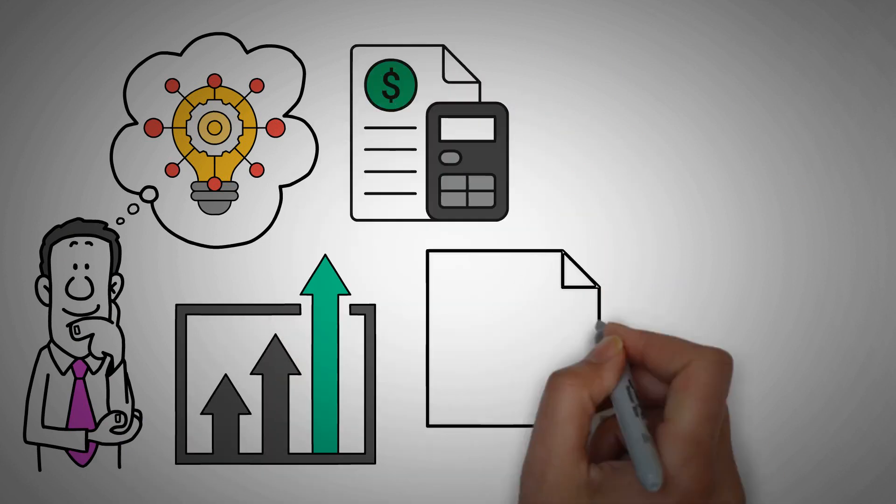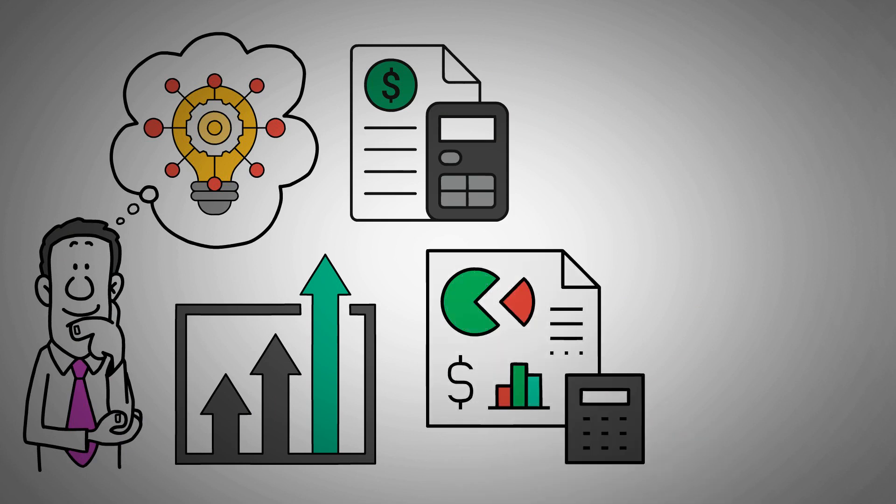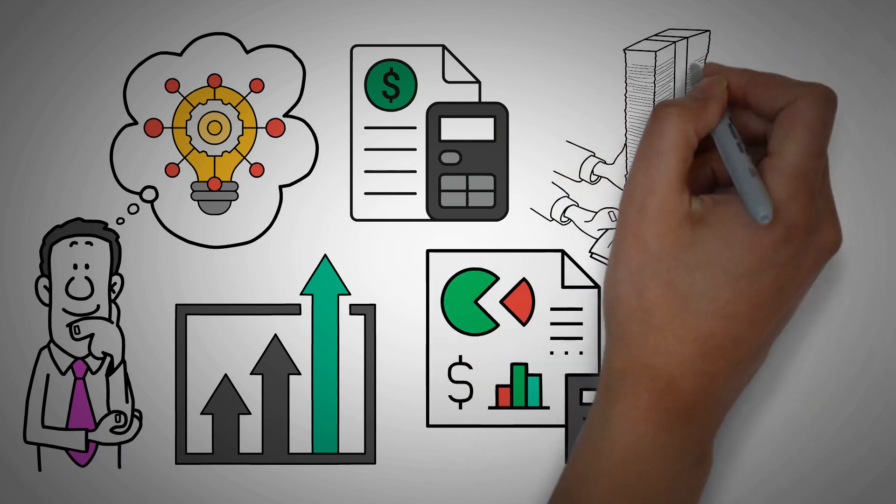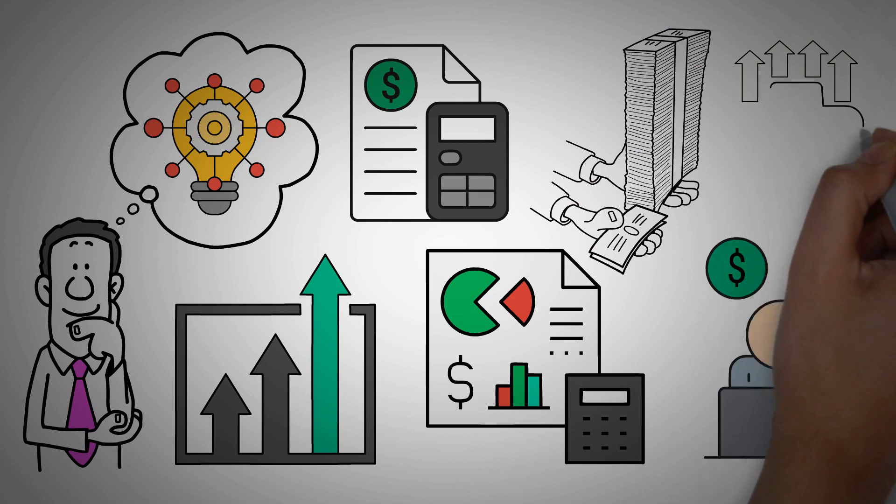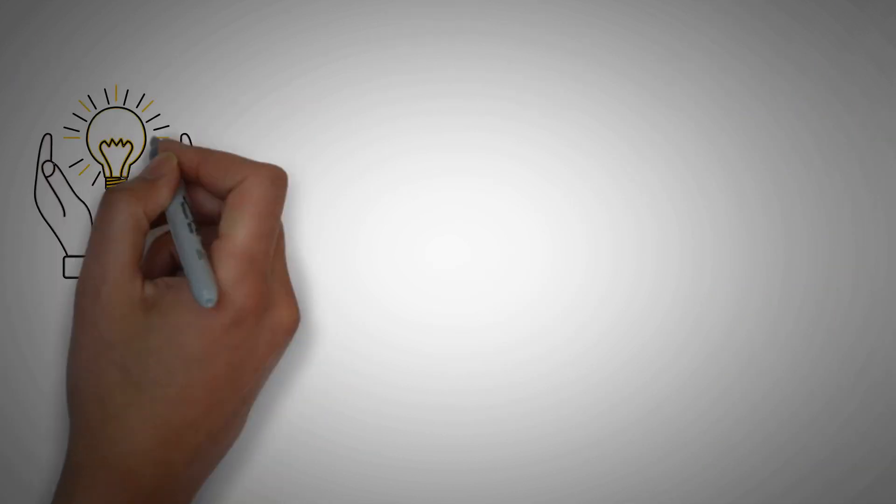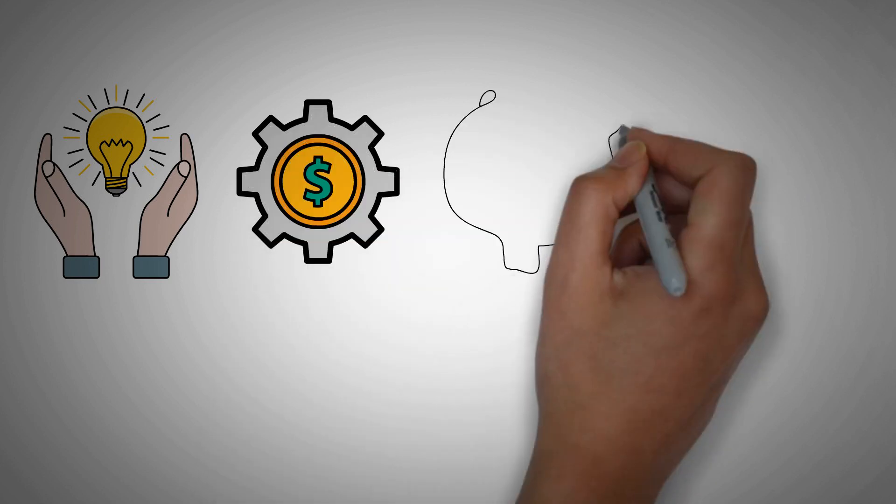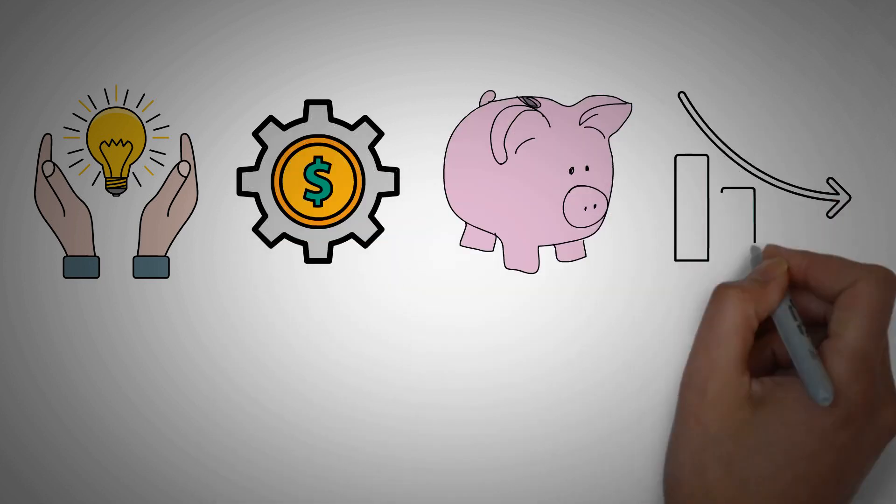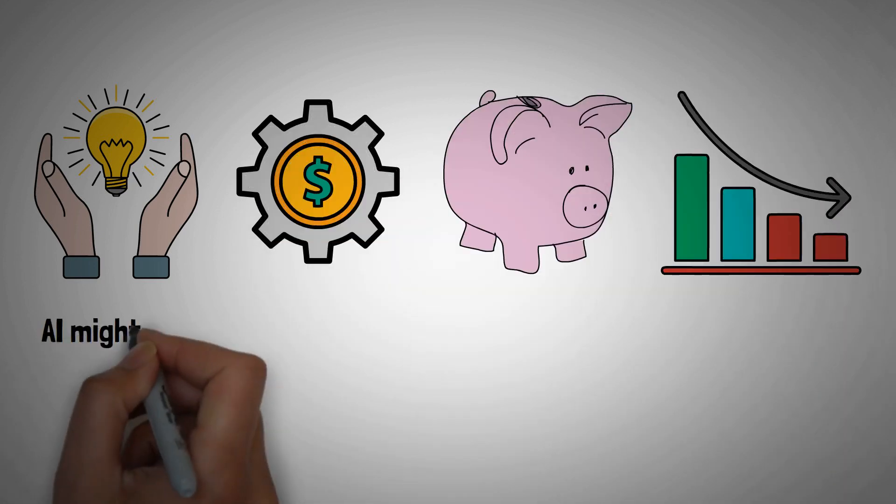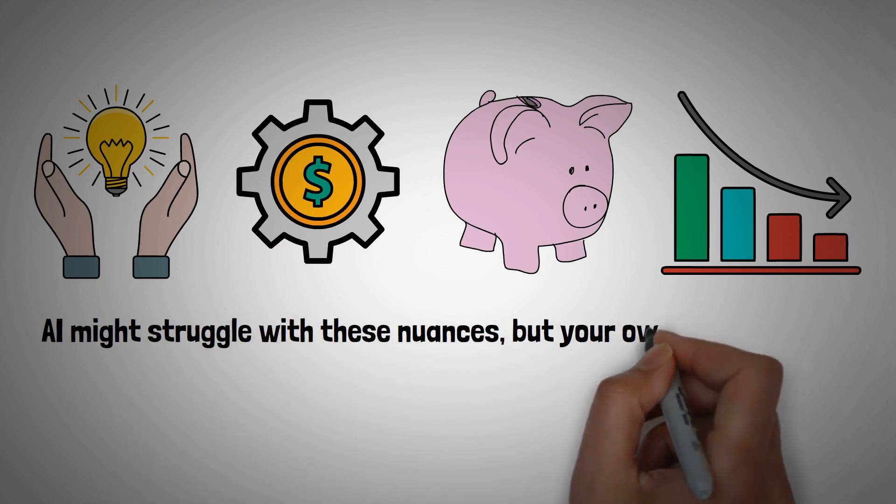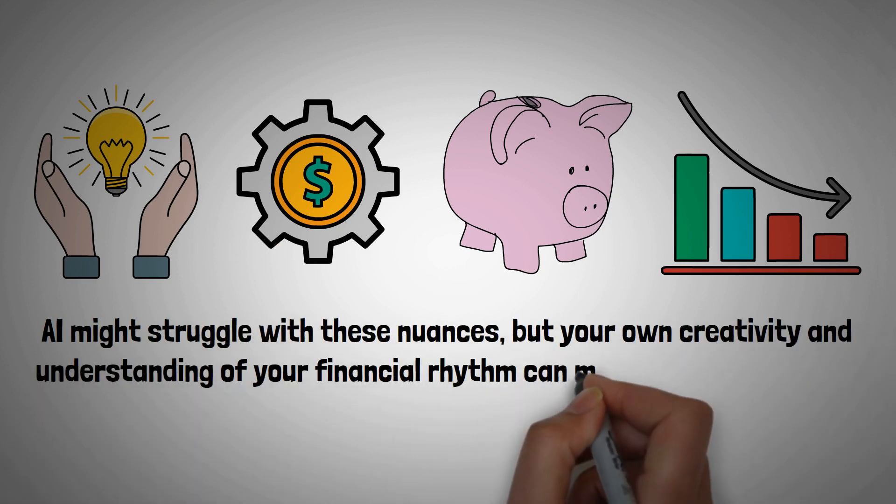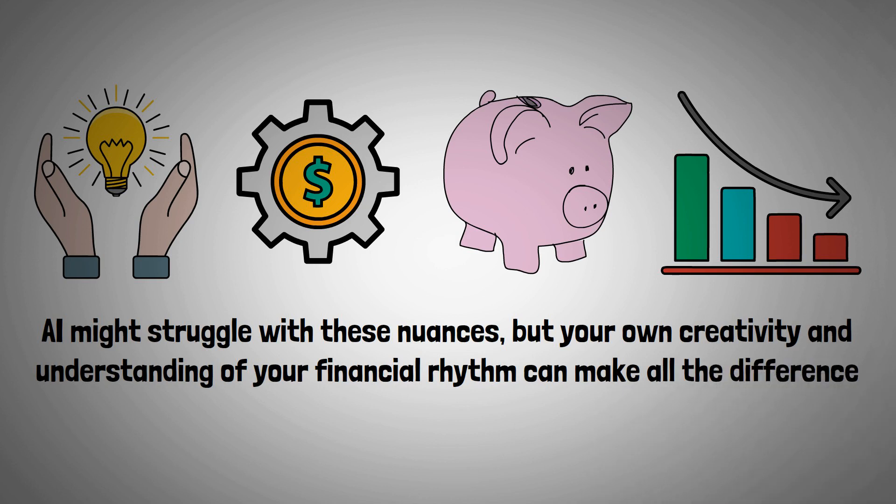Or think about budgeting. AI can give you a standard budget plan, but what if you have an irregular income, like if you're a freelancer or run your own business? You need to get creative with how you manage your money, setting aside funds when times are good to cover you when they're not. AI might struggle with these nuances, but your own creativity and understanding of your financial rhythm can make all the difference.